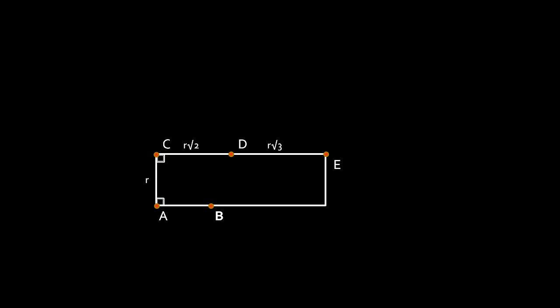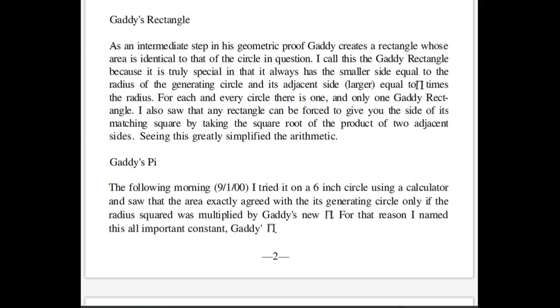These line segments form two adjacent sides of a rectangle, whose area happens to be the square root of 2 plus the square root of 3 times R squared. René calls this rectangle Gaddy's rectangle. He then asserts that this intermediate step in Gaddy's construction should have the same area as the beginning circle.